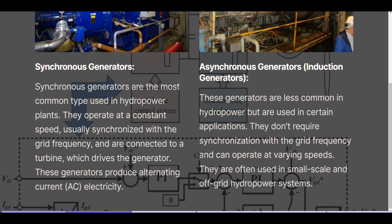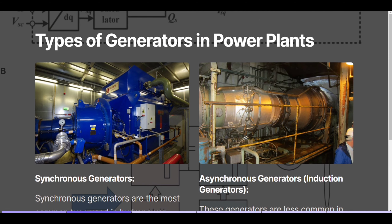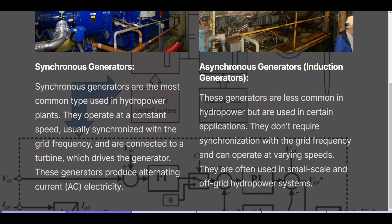Asynchronous generators are less common in hydropower but are used in certain applications. They don't require synchronization with the grid frequency and can operate at varying speeds. They are often used in small-scale and off-grid hydropower systems.